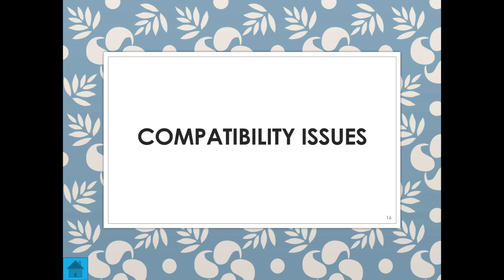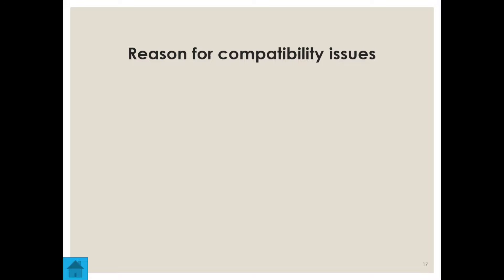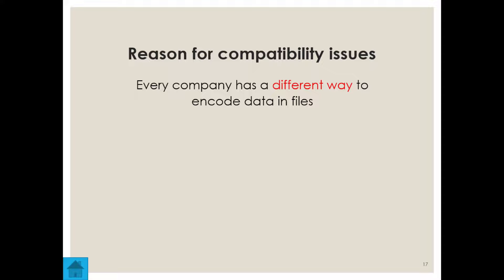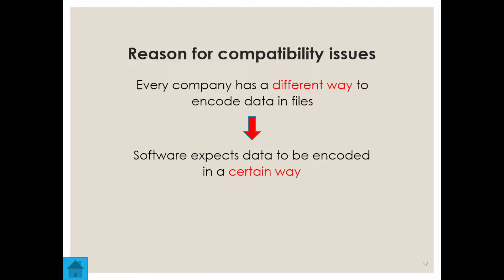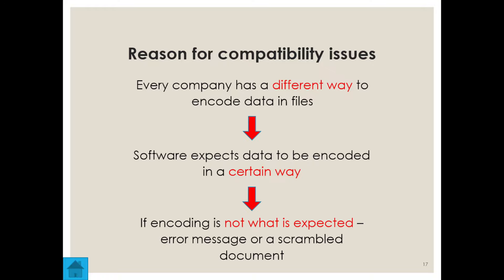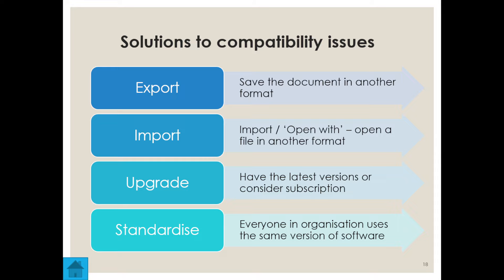You can have compatibility issues where hardware and software don't work together, or two versions of software don't work well together. Every company encodes data differently, and when software expects a different encoding, you may get an error or a scrambled document. Solutions include exporting to another format, importing in a different format, upgrading your version, or standardizing everyone in a company to use the same software version.